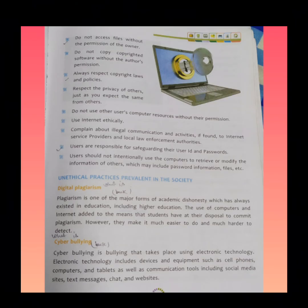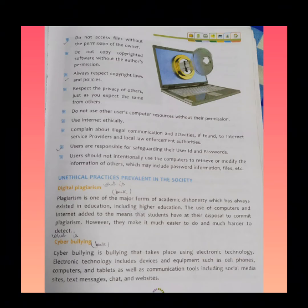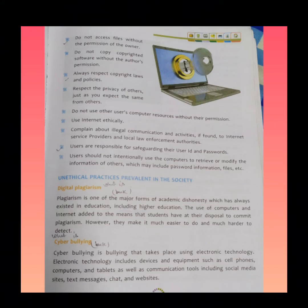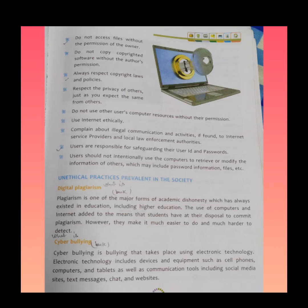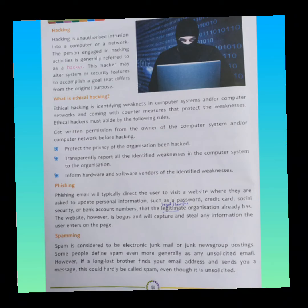The next topic is very important — it will tell you about all unethical practices happening in computing. First is data plagiarism. Plagiarism is basically when you copy someone's academic content from the internet; it is very commonly seen among students these days. Second is cyber bullying — when you bully somebody through electronic technology like text, social media, chat, websites, etc. Third is hacking. Hacking is basically trespassing into somebody's computer to get access to their secured information. The person who performs such a task is called a hacker.